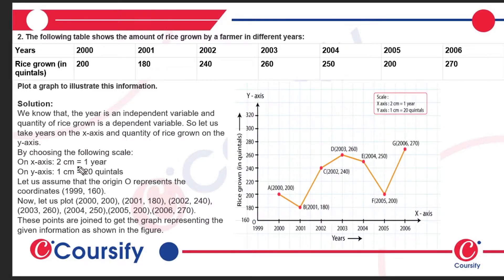On the X-axis, the scale is 2cm equals 1 year. On the Y-axis, the scale is 1cm equals 20 units. We have taken 20 squares here.